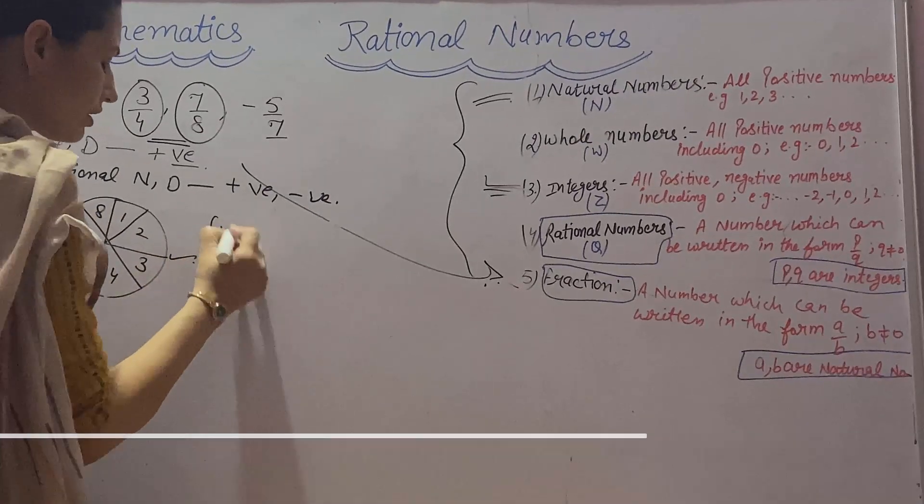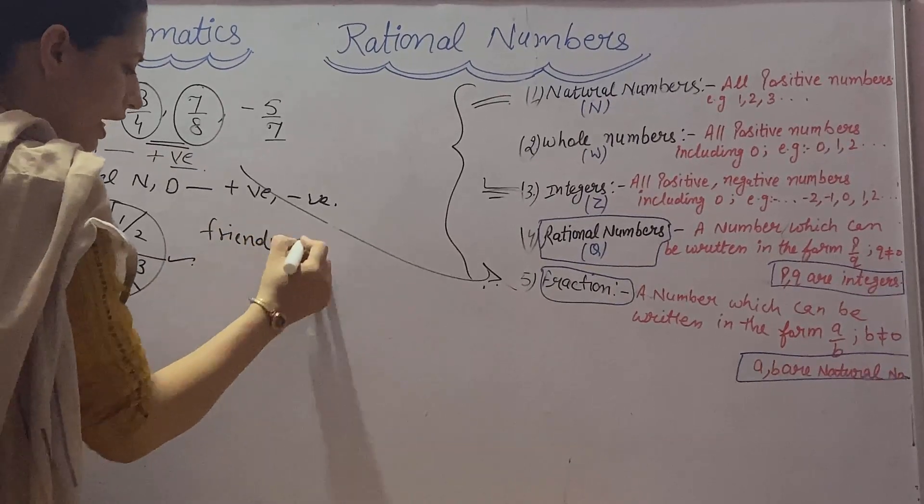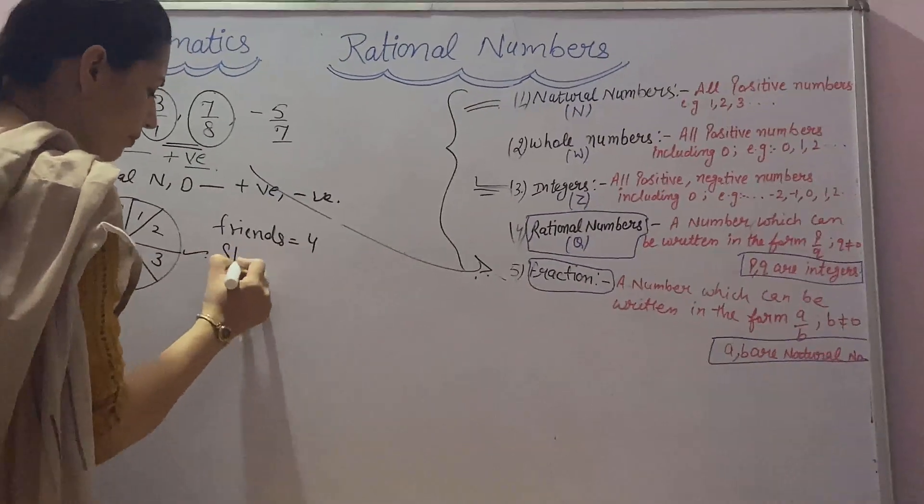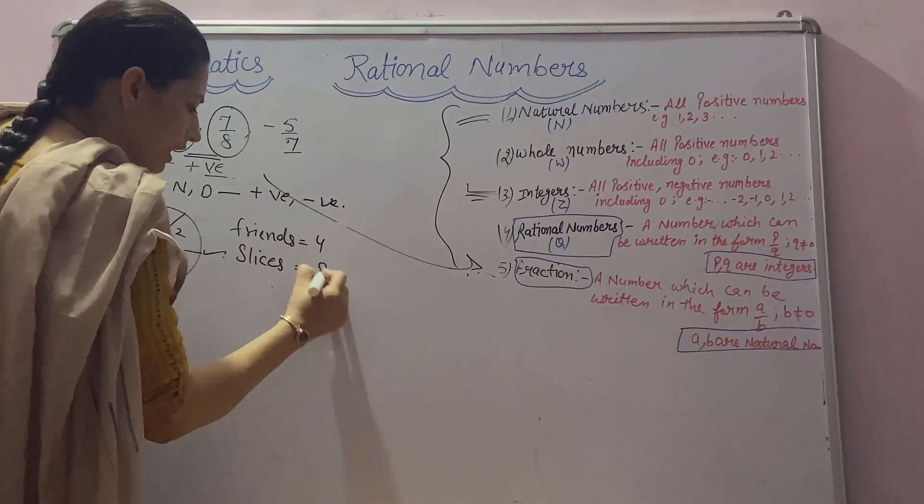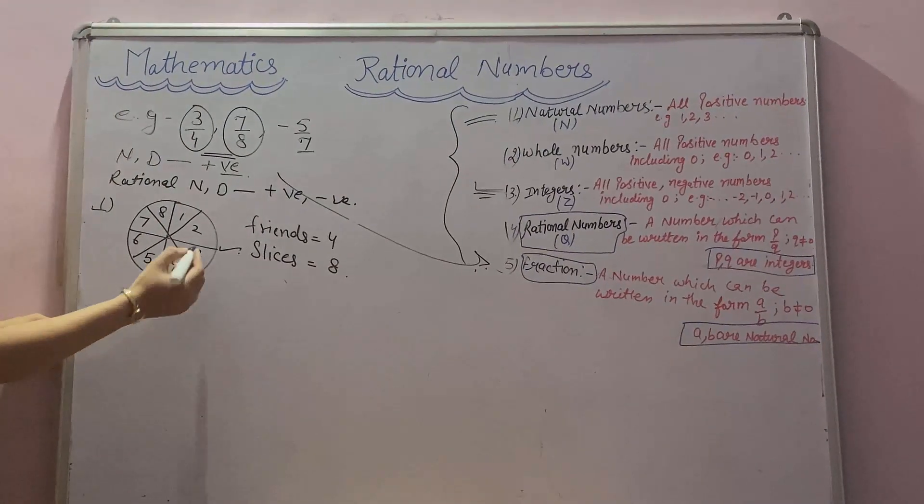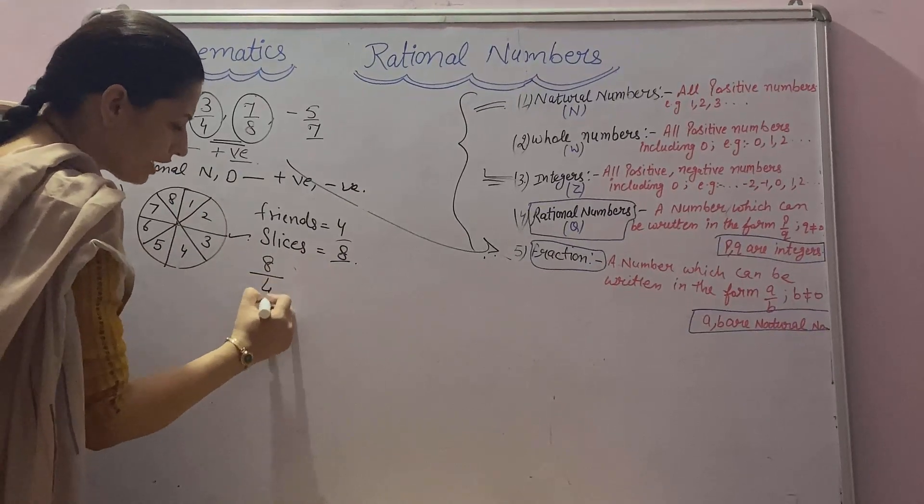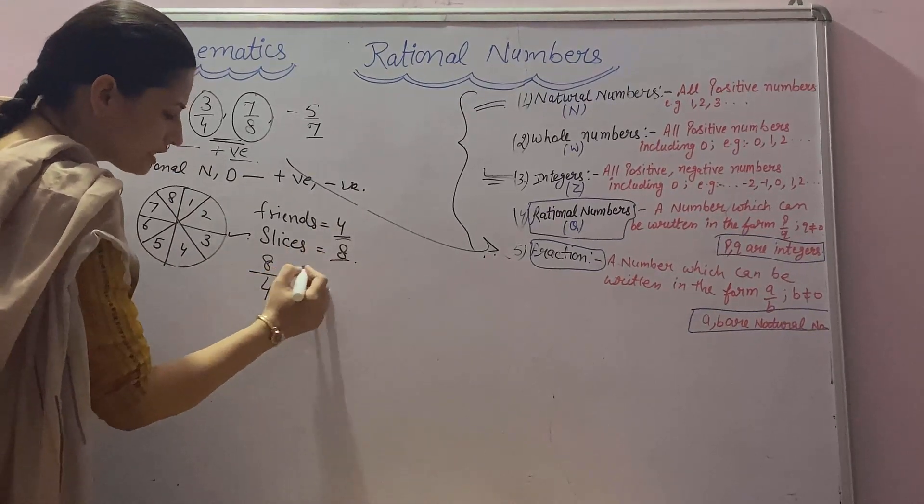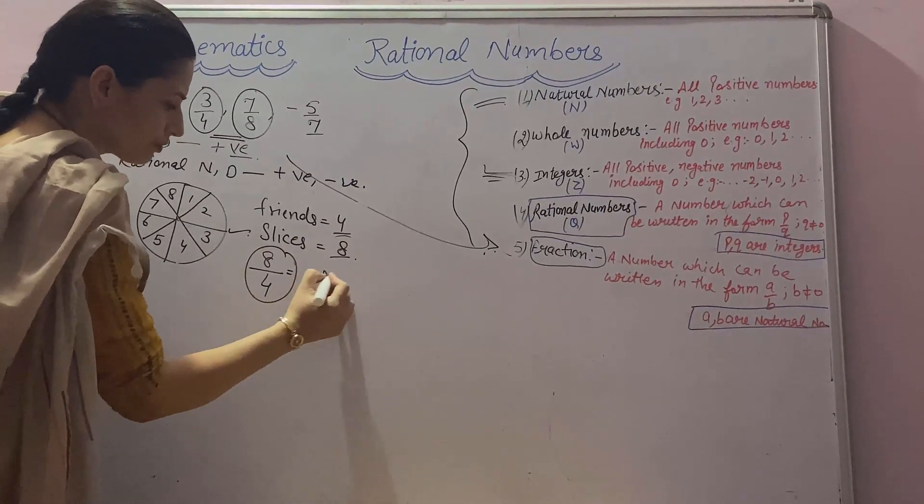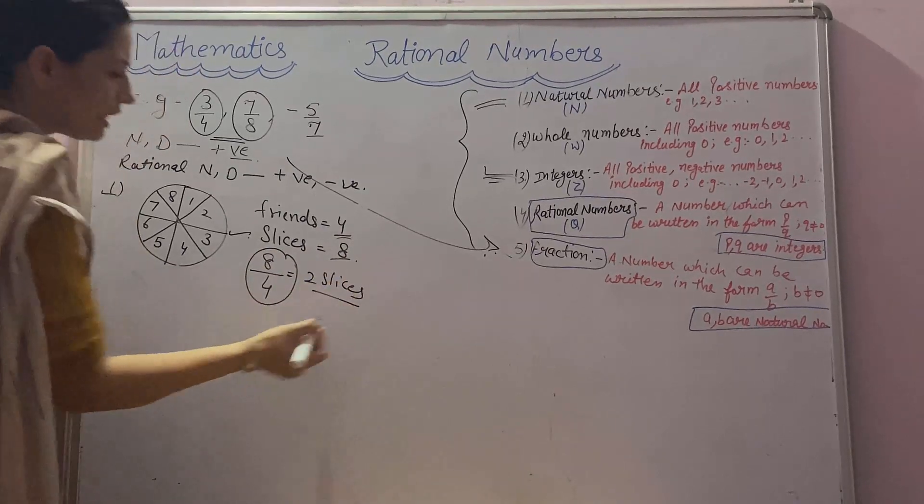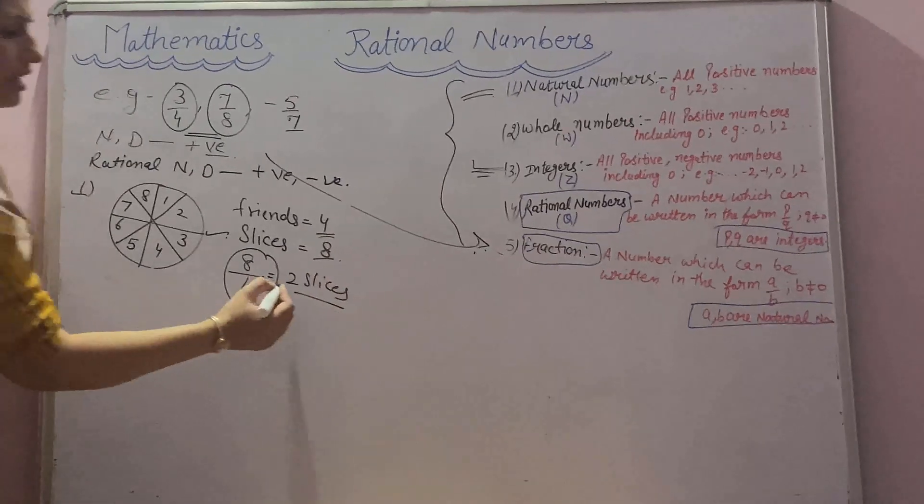How will you put this learning in a rational number form? Friends 4 and slices 8. Slices divided by friends. This is equal to 2. That means each friend can get 2 slices.